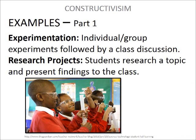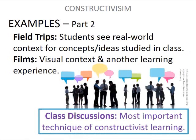Some examples of constructivism are in the fields of experimentation. If you have individual or group experiments followed by a class discussion, you are encouraging constructivism. Research projects are another example, where students research a topic and present their findings to the class. Third, field trips — students get to see real-world context for concepts and ideas studied in class. Fourth, films will provide a visual context and another learning experience. The most important aspect of constructivism is having class discussions, because this will enable students to share their ideas and knowledge with their classmates.